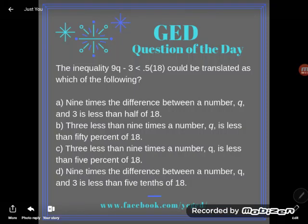Hey GED students, it's GED question of the day. We've been given an inequality: 9q minus 3 is less than 0.5 times 18. It could be translated as which of the following? Now, I read that inequality one way, but that doesn't mean that's the only way to think of it. In fact, the way I read it is not in this list, but we have a few different things going on.